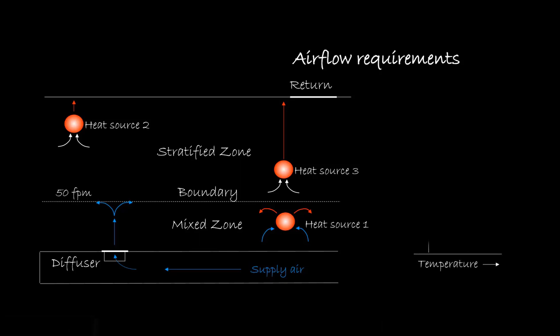This is a typical UFAD temperature gradient. There is a small temperature variance between ambient air at the floor and that at which the boundary layer forms. Above this, ambient air temperature increases due to the unidirectional convective heat plumes traveling through it.